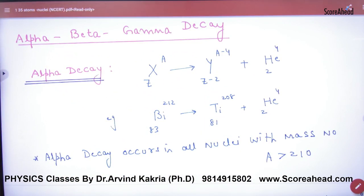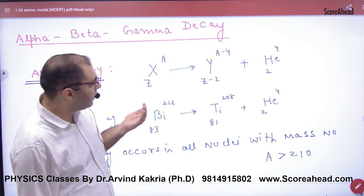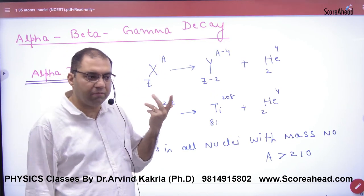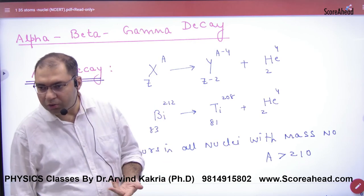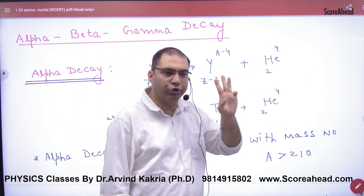The first decay is alpha decay. What is alpha decay? Alpha decay, we discussed that if X is a nucleus or an atom, A Z, atomic mass number A and atomic number Z, so alpha particle came out. How do we represent the alpha particle? Helium 4,2. This is alpha particle.